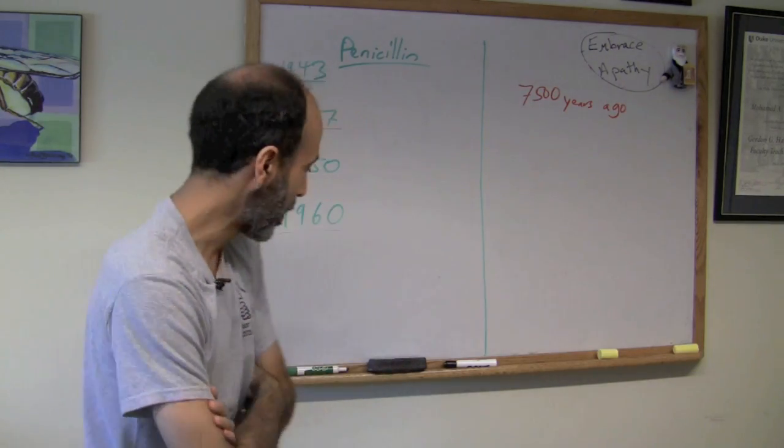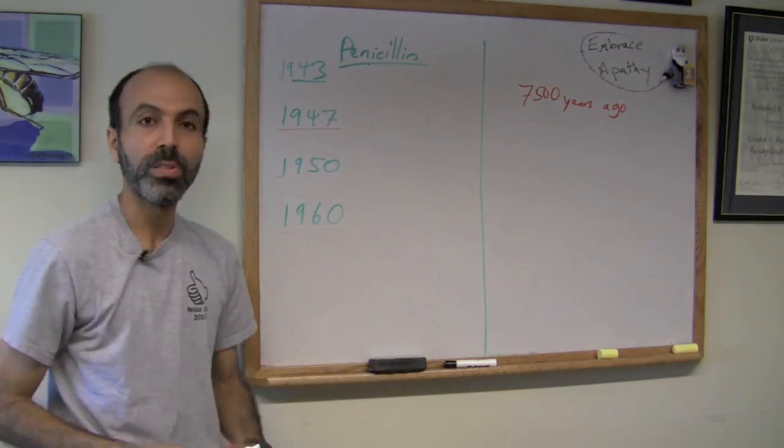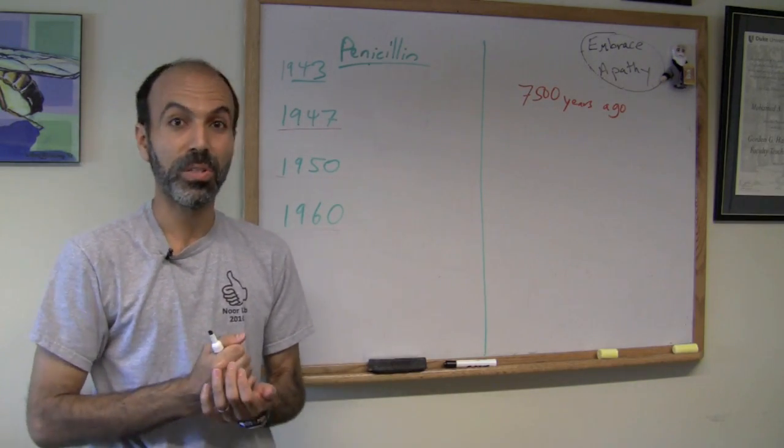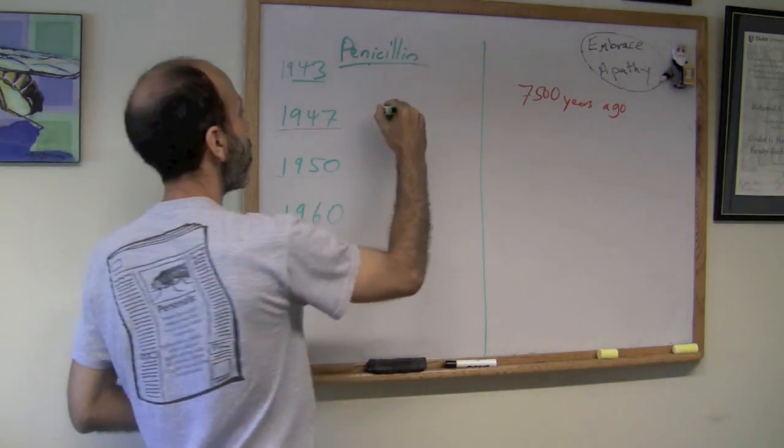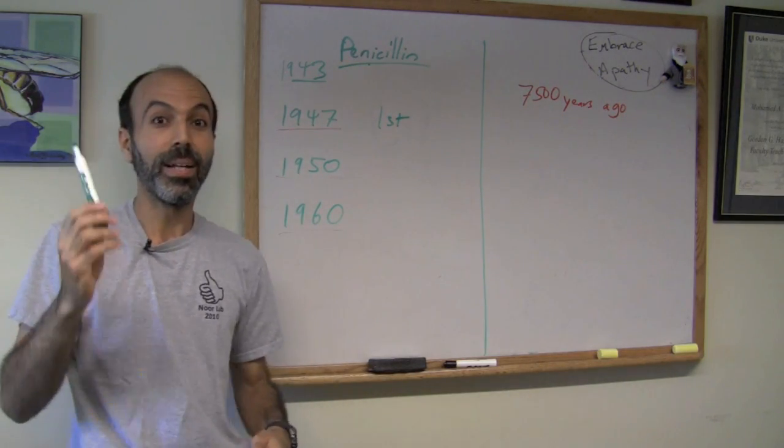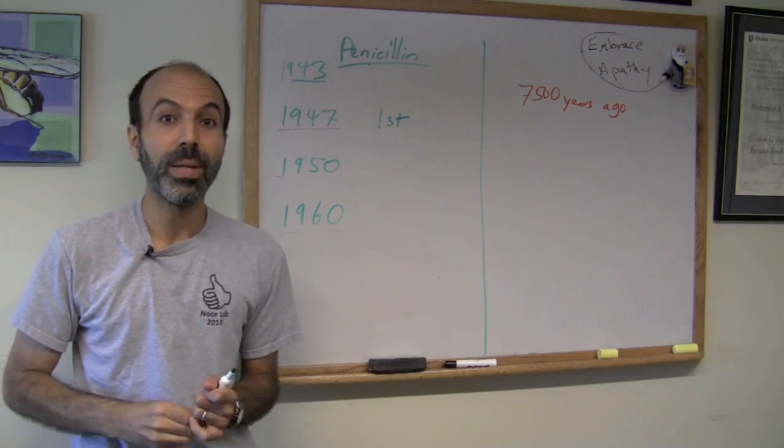Well, let's talk about this for a second. Penicillin was first mass-produced in 1943. This was the wonder drug that could cure staph infections. By 1947, the first resistant strain of staph was isolated that actually could grow in the presence of penicillin.